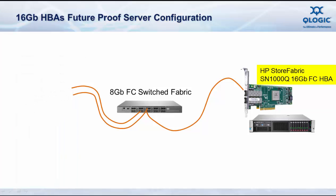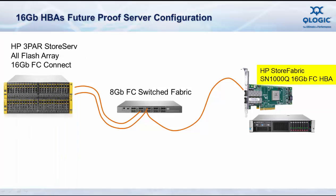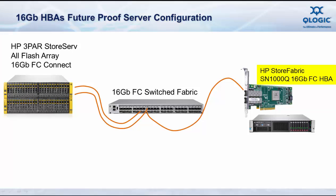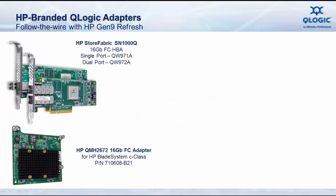When the time comes to deploy HP 3PAR StoreServ all-flash arrays and upgrade to HP StoreFabric 16GB SAN fabrics, there's no need to make changes to the HP Gen9 server configuration that you deployed earlier. So what 16GB Fibre Channel adapters do we use in the Gen9 servers?